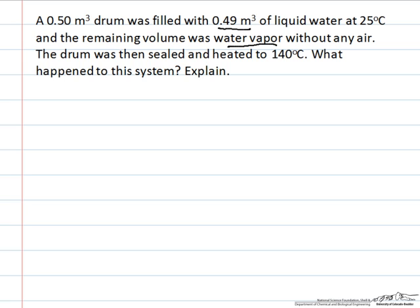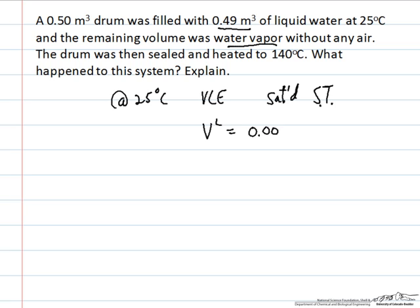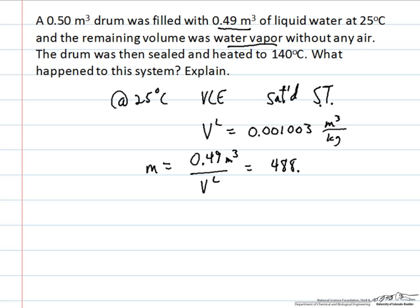We'll start by looking at our initial conditions. We know that at 25 degrees C we have vapor-liquid equilibrium — both vapor and liquid are present — and therefore we can use the saturated steam tables to look up any property we want. In this case we're working with volume. The specific volume of the liquid phase is 0.001003 m³ per kilogram, which allows us to compute the mass of liquid water: 0.49 m³ divided by that specific volume gives us approximately 488.5 kilograms in the liquid phase.